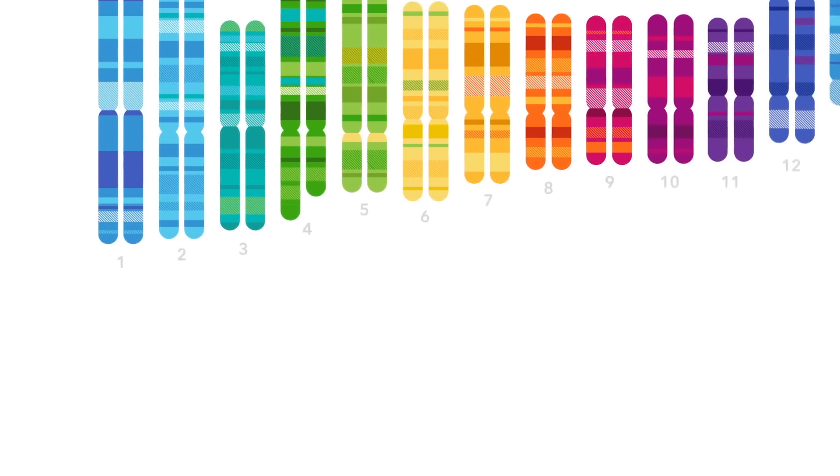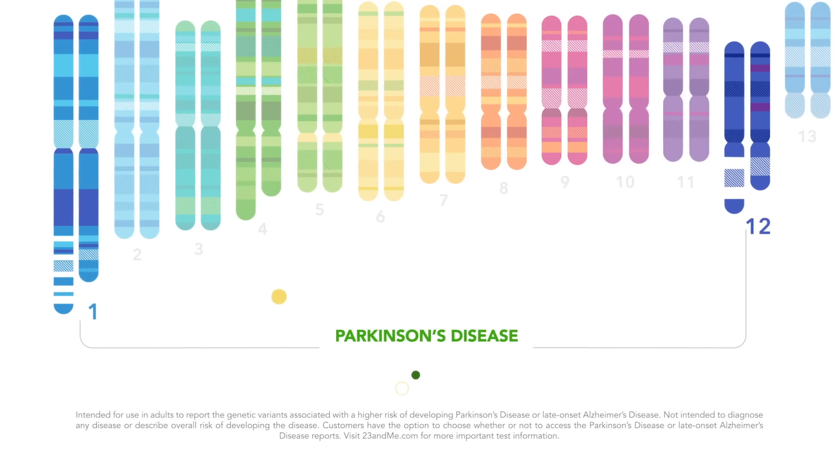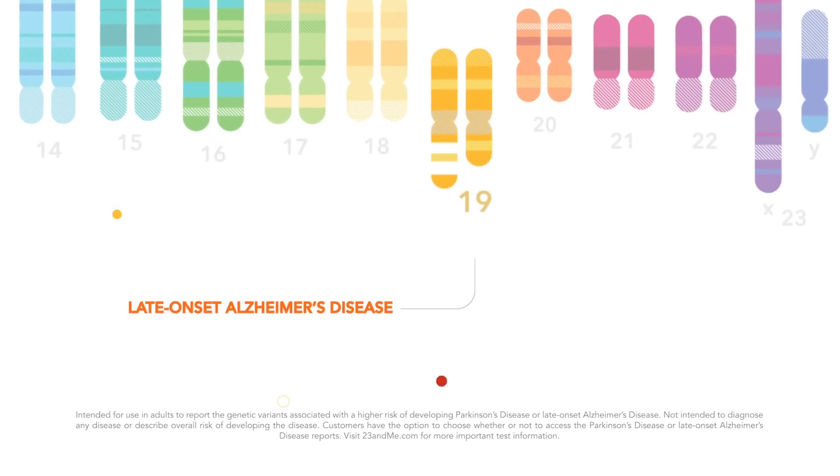If you choose to, you can opt in to receive genetic health risk reports, like Parkinson's disease and late onset Alzheimer's disease. Free! Now, there's only one thing left to do.